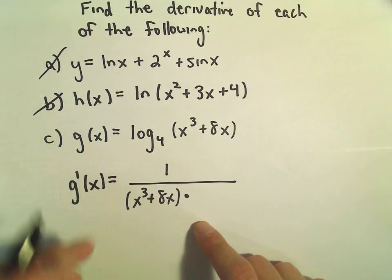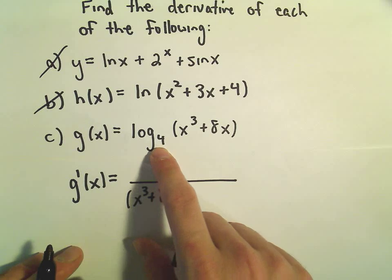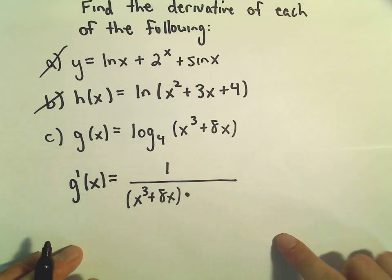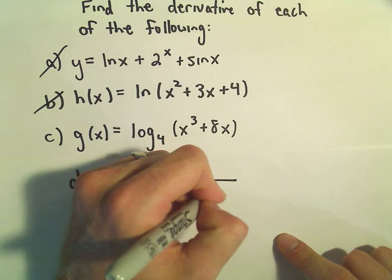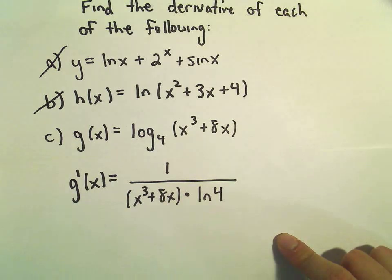The new part, in the denominator, is we have to tack on this natural logarithm of the base. So we'll have to multiply the denominator by the natural logarithm of 4.